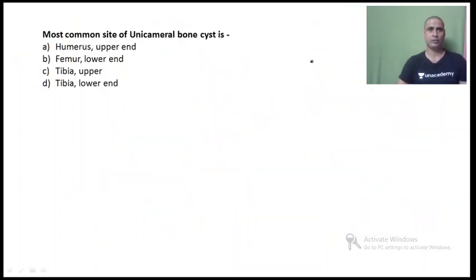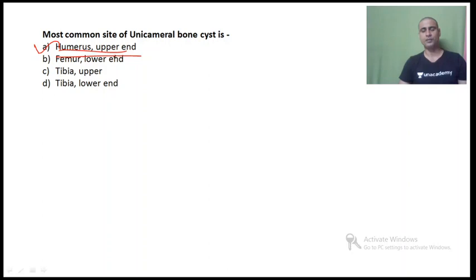Moving to the next question: Most common site of unicameral bone cyst — humerus upper end, femur lower end, tibia upper end, tibia lower end. The answer is humerus upper end. Unicameral bone cyst, also known as simple bone cyst or solitary bone cyst, is a metaphyseal tumor and the most common location is the metaphysis of the proximal humerus.